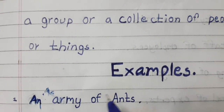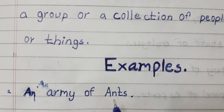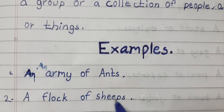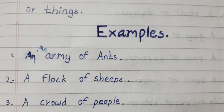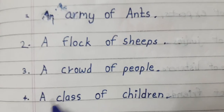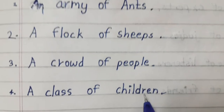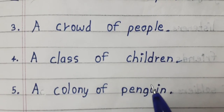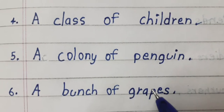An army of ants — the collective noun of ants is army. A flock of sheep. A crowd of people. A class of children. A colony of penguins. A bunch of grapes.